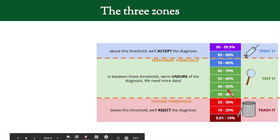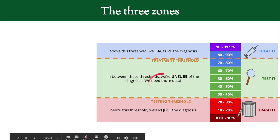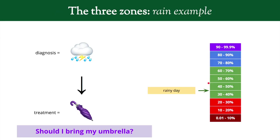Above the treatment threshold we accept the diagnosis and treat it. In the middle zone we test it — we need more information. So we have three zones: reject it, don't know and need more information, and accept the diagnosis. Let's go back to our weather example.